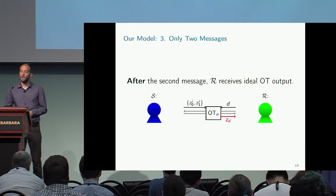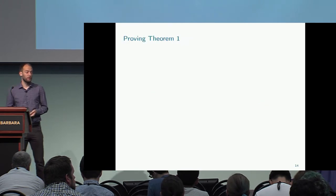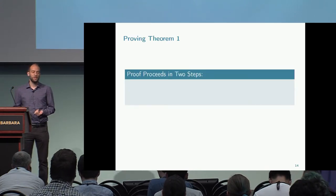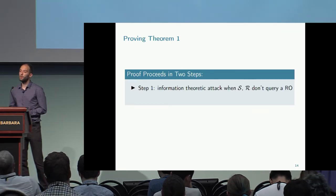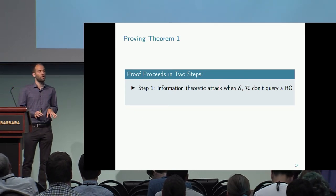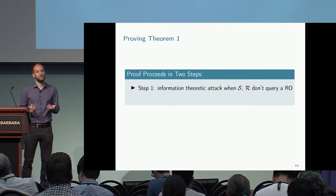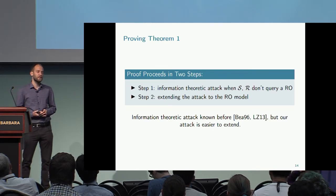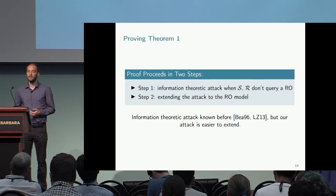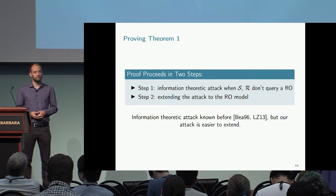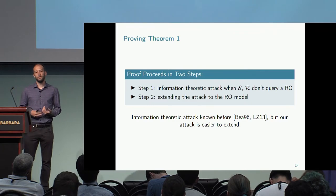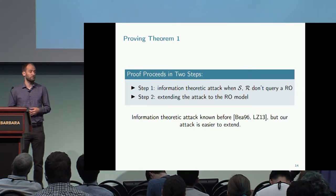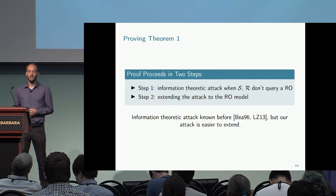This is an overview of our model. In the paper, we do basically two steps. The first step is an information-theoretic attack when we don't consider any random oracle — we only have access to the ideal OT. On its own this is not a novel result, since it was previously known that we cannot have information-theoretically secure OT extension and that OT extension implies one-way functions. But the merit of this attack is that it can be easily extended to the random oracle model, and it is tailored specifically to the case of oblivious transfer.